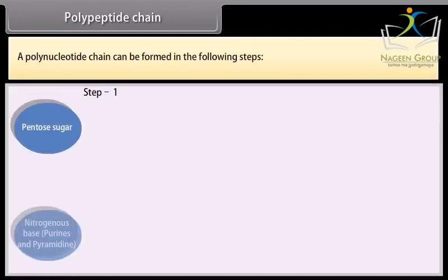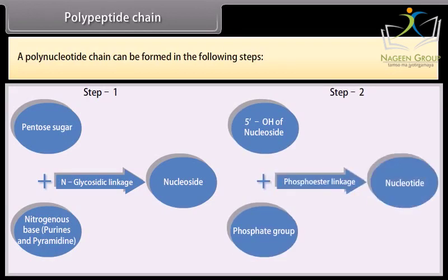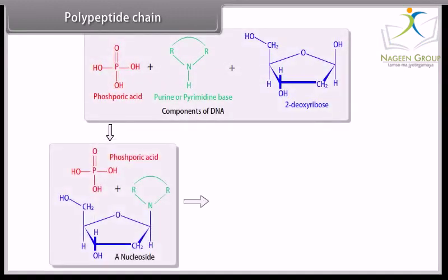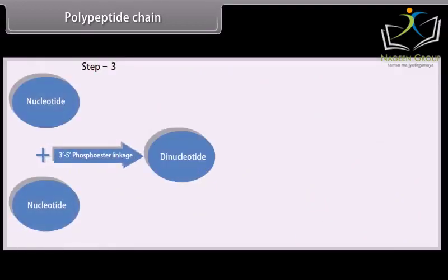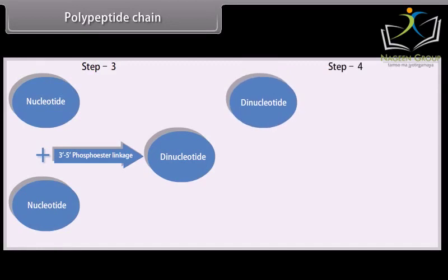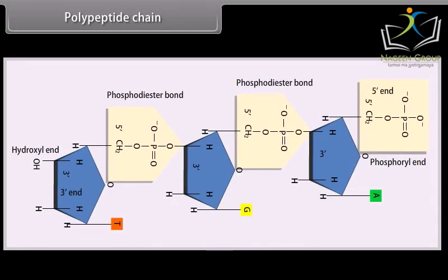A polynucleotide chain can be formed in the following steps. A polynucleotide chain has a phosphate moiety at one free end of the ribose sugar. This is known as the 5' end of the polynucleotide chain. The other free end of the ribose sugar has an attached OH group. This is called the 3' end of the polynucleotide chain.